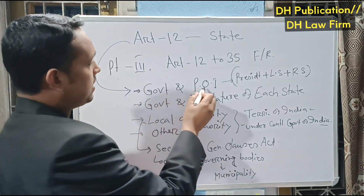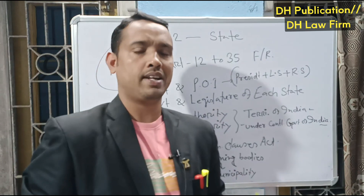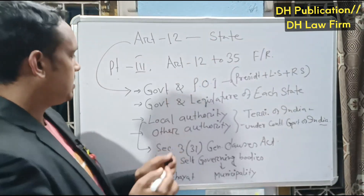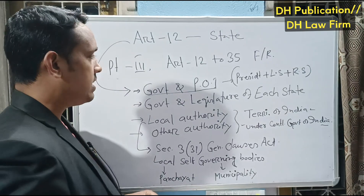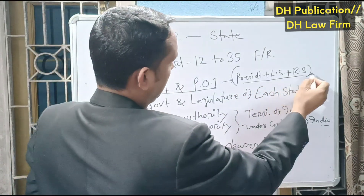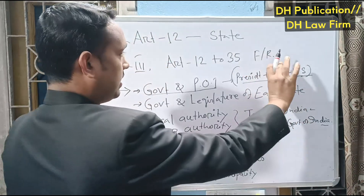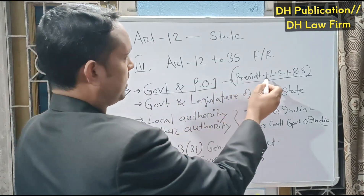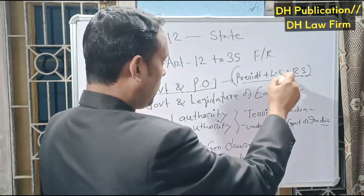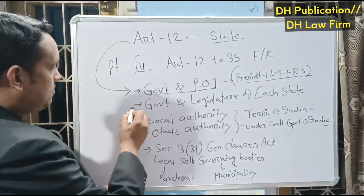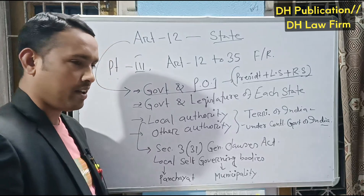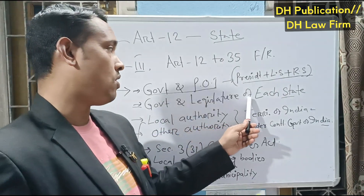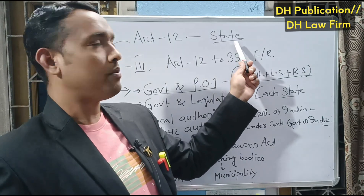The government of India refers to the central government, and in each state it refers to the state government. The term 'state' under Article 12 also means parliament of India, which includes the President, Lok Sabha, and Rajya Sabha — these three are included in parliament of India. Similarly, the government and legislature of each state are also included in the definition of state, since each state has its own state government.